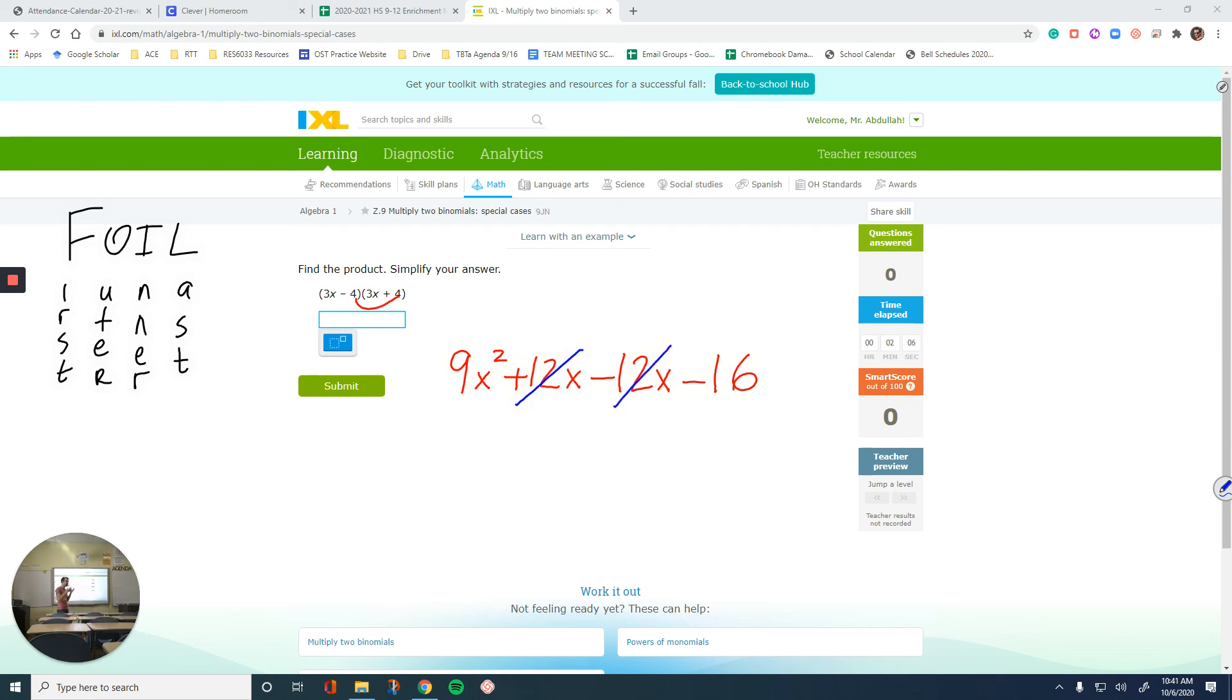And bring down whatever you have left, which is 9x squared minus 16, which would be our final answer for this question.